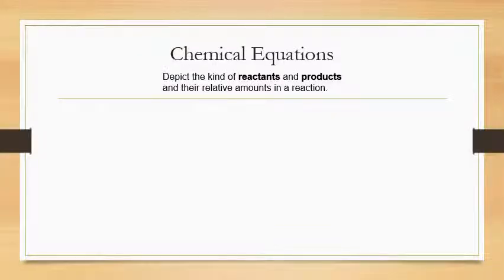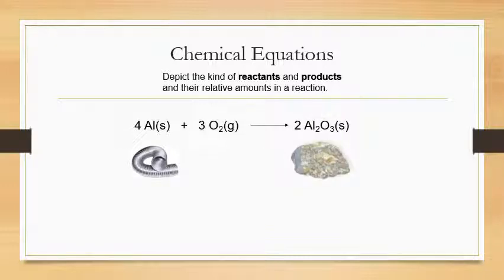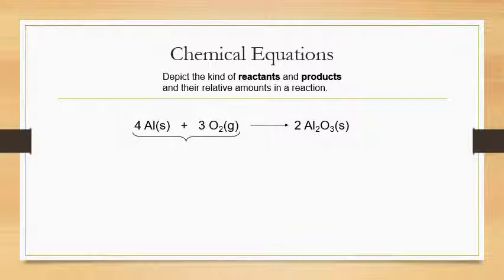Chemical equations describe the reactants and products and their relative amounts in a reaction. For example, aluminium reacting with oxygen to form aluminium oxide. The aluminium and oxygen are the reactants, and the product — aluminium oxide — is always on the right-hand side. Reactants are on the left-hand side and products are always on the right-hand side.